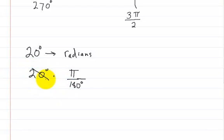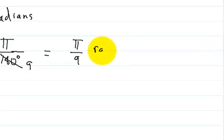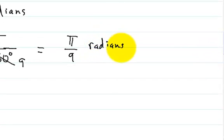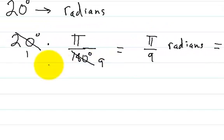20 goes into 20 once, 20 goes into 180 nine times, so then you just multiply the one by pi, so you get pi over 9 radians. That is equal to 20 degrees. So that's how you convert from degrees into radians.